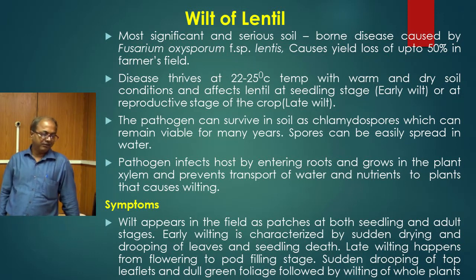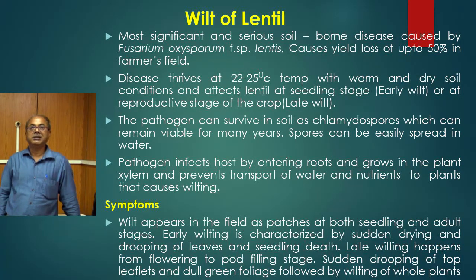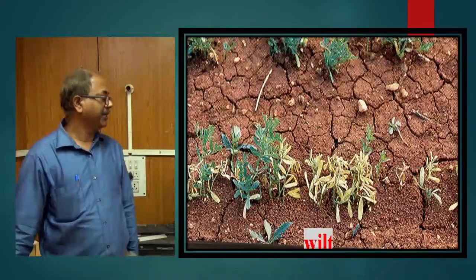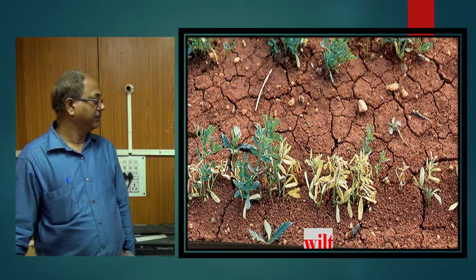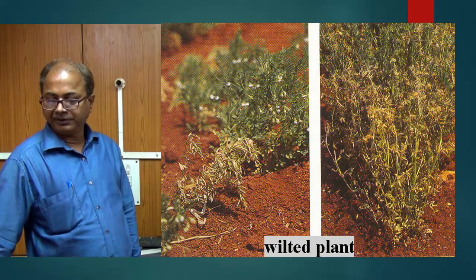The wilt appears in the field as patches, affecting both seedlings and adult plants. Soil-borne diseases characteristically appear in patches in the field. Early wilting is characterized by sudden drying and drooping of leaves and seedling death. Late wilting happens from flowering to pod-filling stage with sudden drooping of top leaflets, dull green foliage, followed by wilting of the whole plant. You can see the symptoms of the wilted plant and heavily infected plot in the figures.